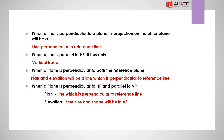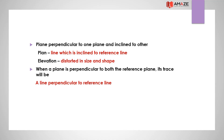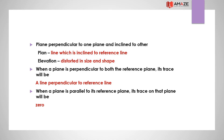When a plane is perpendicular to HP and parallel to VP, the plan is a line perpendicular to the reference line and the elevation shows its true size and shape. When a plane is perpendicular to one plane and inclined to the other, the plan will be a line inclined to the reference line and the elevation will be in distorted size and shape. When a plane is perpendicular to both reference planes, its trace will be a line perpendicular to the reference line. When a plane is parallel to its reference plane, its trace on that plane will be zero.